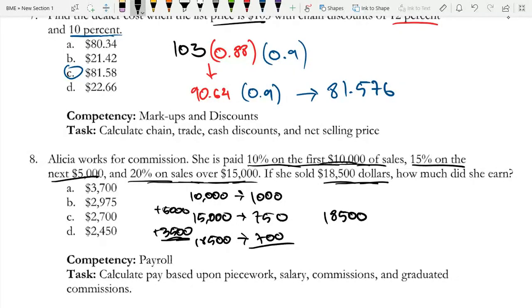If we add these three up, we get $700 plus $750 plus $1,000. I could have done this in my head. $2,450. Thank you for watching. I hope you found this video helpful. Thank you, and goodbye.